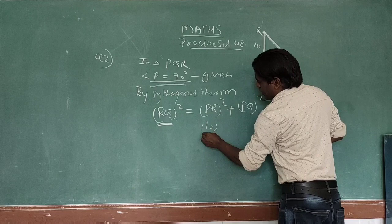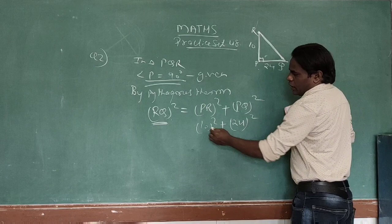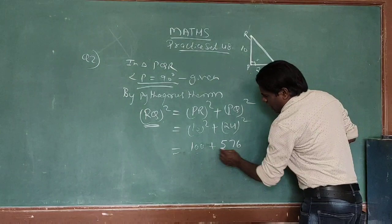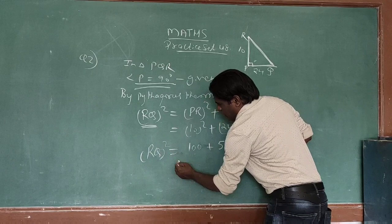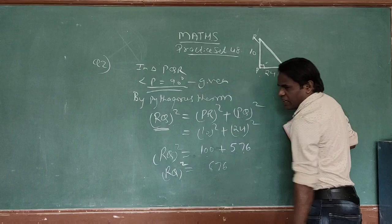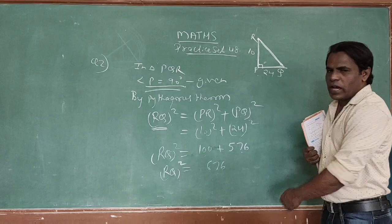Now, PR is given as 10, so we write 10 squared, and PQ is given as 24, so 24 squared. The square of 10 is 100 and the square of 24 is 576. Adding these, RQ squared equals 676. Now by taking the square root on both sides,